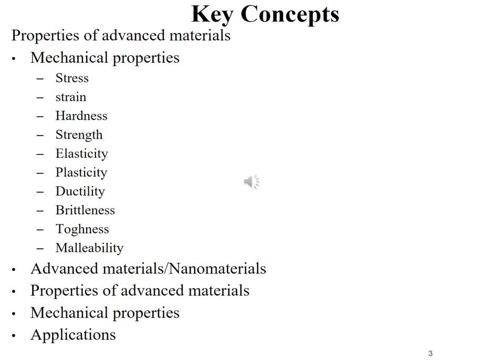The key concepts we will discuss under this topic are properties of advanced materials. First we will discuss mechanical properties. For mechanical properties, some important basic terms are stress, strain, hardness, and strength. We will talk about elasticity and plasticity, ductility and brittleness, toughness, and malleability. Then we will discuss what are advanced materials and nanomaterials, their mechanical properties, and applications related to mechanical properties.